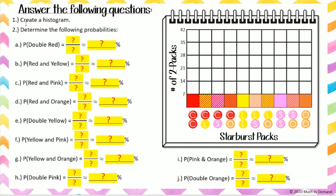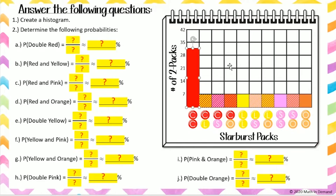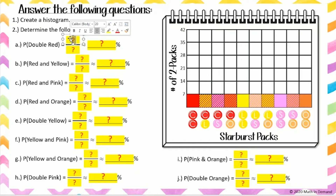I will help you with the first calculation, but first you will need to construct a histogram. You will construct the histogram by clicking on each bar and moving it up or down to the correct number of Starburst packs that contained both of the colors. After completing the histogram, you will now determine the probability of getting a certain pair of Starburst.